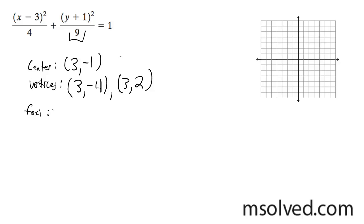For my foci, real quick, it's just going to be the square root of 9 minus 4. And what you're going to do is you're going to add this to the center component, square root of 5. So you're going to get 3, and then you're going to get negative 1 minus root 5. And then you're going to get 3, negative 1 plus root 5.